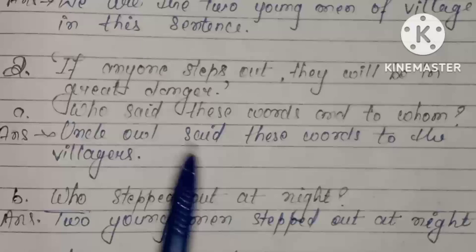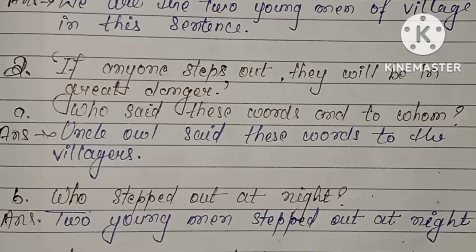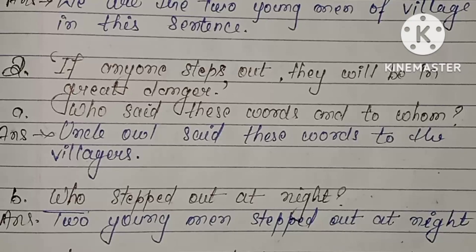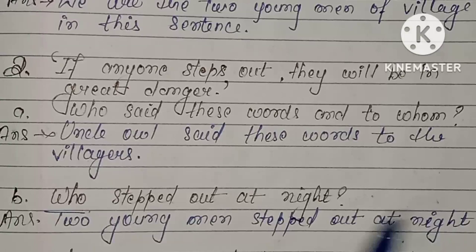Now paragraph second — aap lhoog dhek rhe hai ki yaha pe likha hua hai: 'If anyone steps out, they will be in great danger.' Agar koi bhi baahar niklae gha, toh woha bhoat hi bada musibat mein fust saktta hai. Toh yye koon bola tha? Uncle owl bola thay sare villager se. Who said these words and to whom? Uncle owl said these words to the villagers.